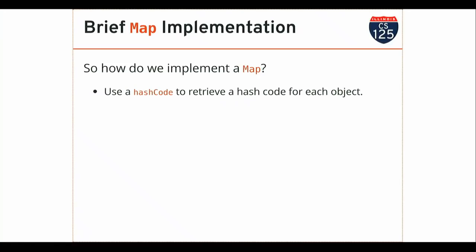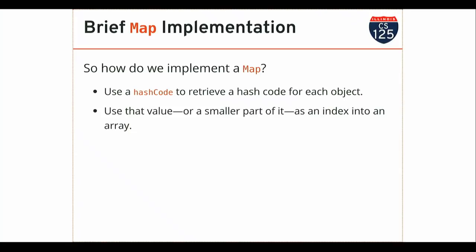Very briefly, we have about ten minutes — let's talk a little about how we would implement such a thing. This is clearly cool and useful, but how would I implement this and what does it have to do with hash functions? Here's what we're going to do: when you put a value into the map, I'm going to call hashCode, which gives me a hash value for each object. This is built into Java — I don't have to implement my own hash function. Then I'm going to use that value — actually I'll shrink it down using the remainder operator — and use it as an index into an array. Internally my map implementation stores an array of objects.